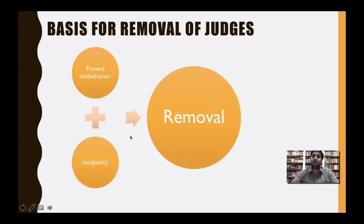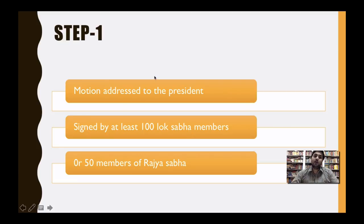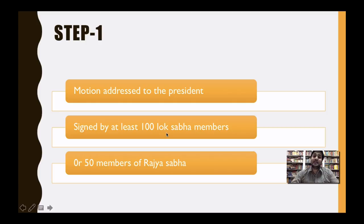It all depends upon the will of Parliament to take a particular act of a Supreme Court or High Court judge as proved misbehavior or incapacity, and depending upon its decision, it starts the removal proceeding. Now, if Lok Sabha wants to initiate a motion for the removal of Supreme Court or High Court judges, it requires the support of at least 100 Lok Sabha members.